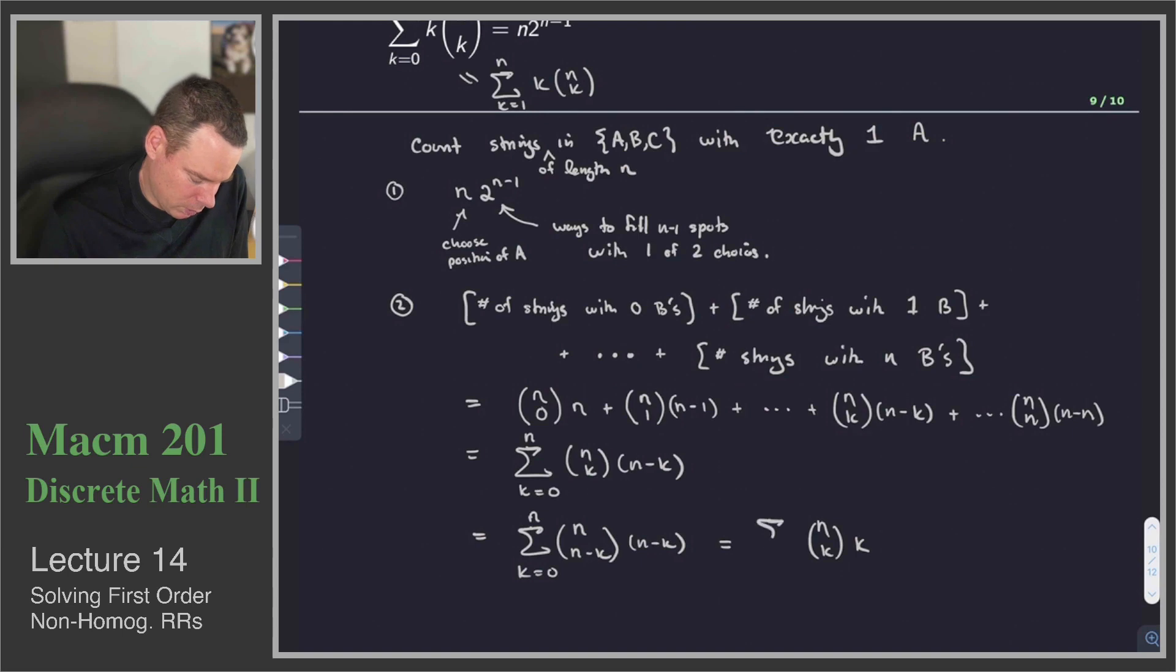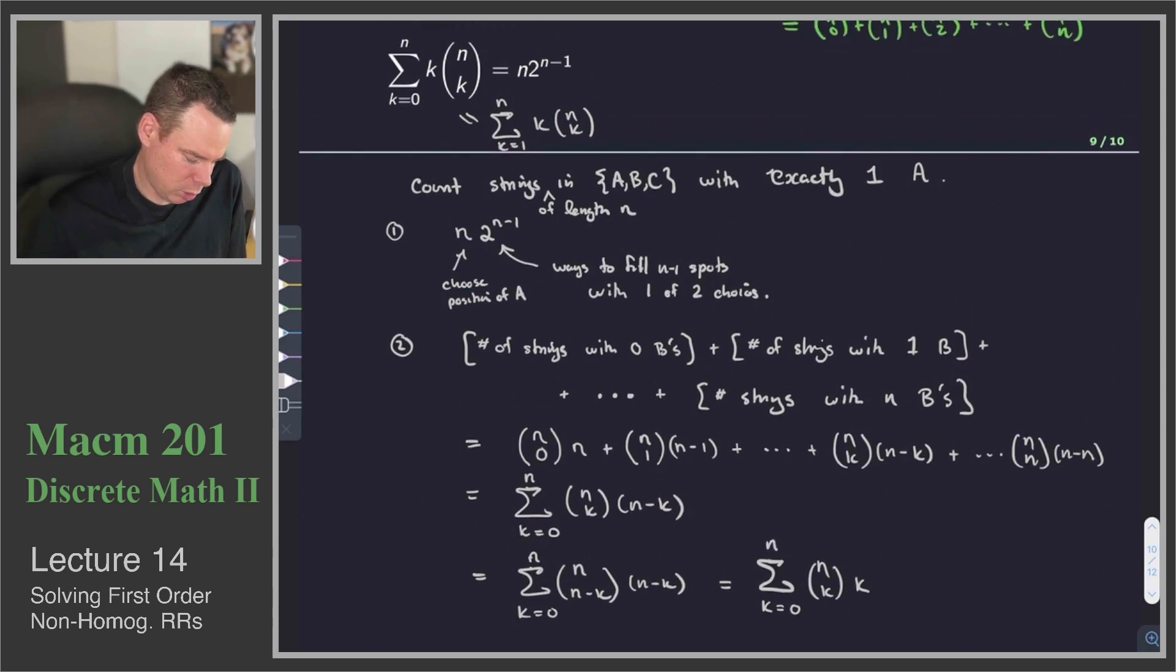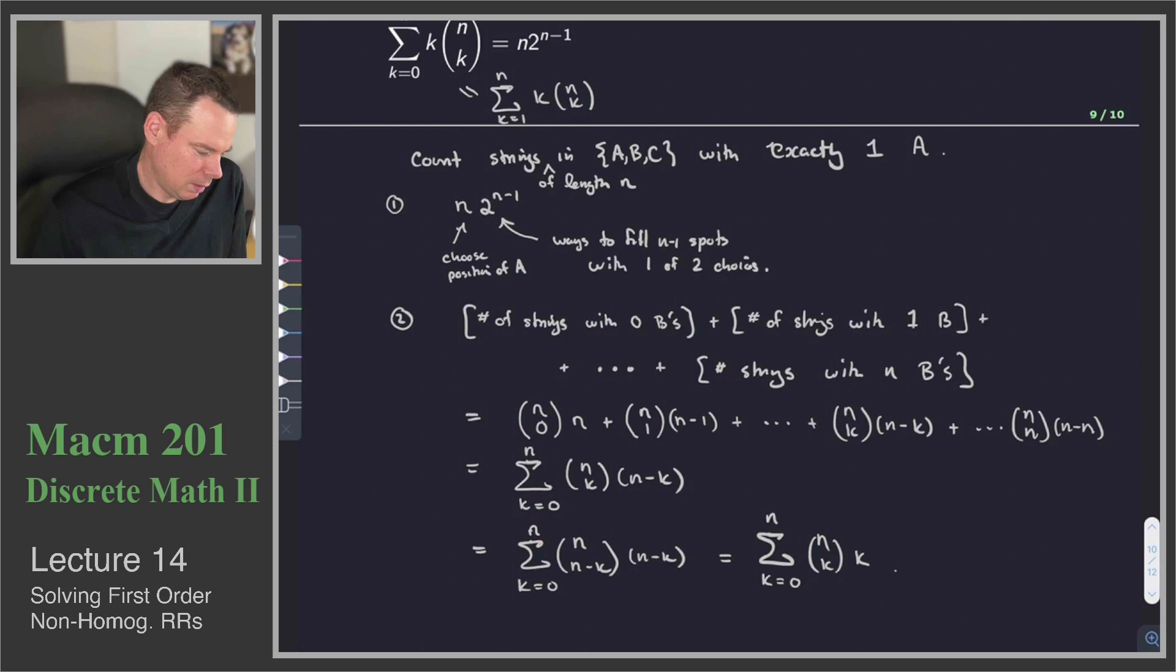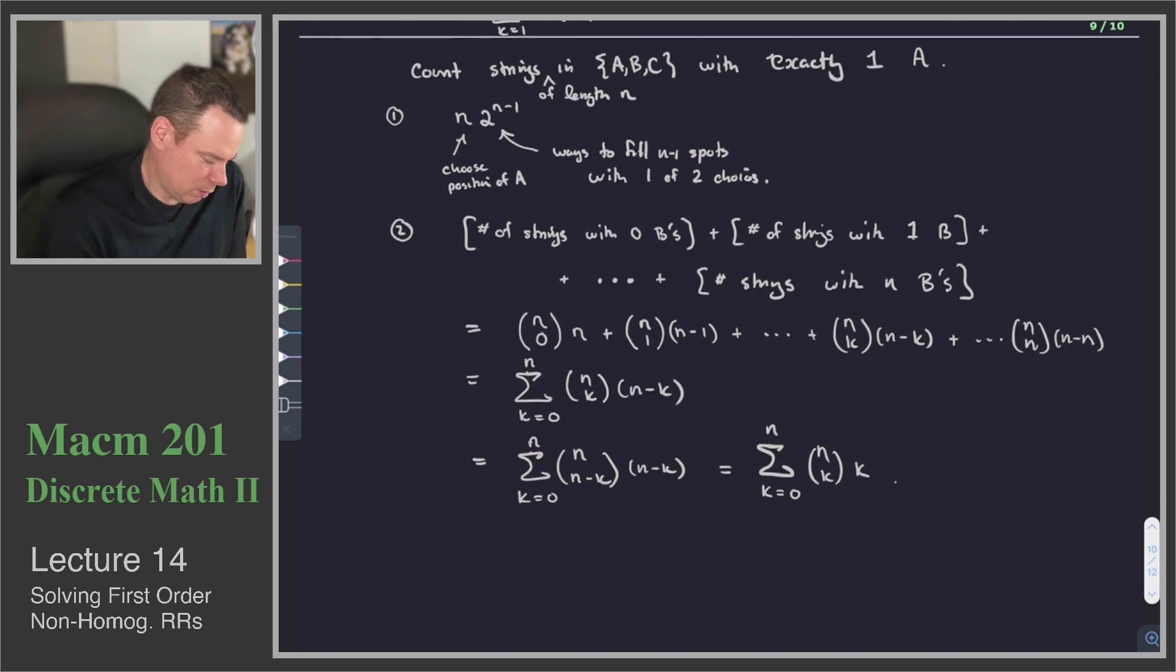So this is just a sum over n choose a number times the number. Originally k went from 0 to n. So the numbers here would have gone from n down to 0. That means we can rewrite it as a sum where k goes from 0 up to n. We've counted the same collection of objects in two different ways.